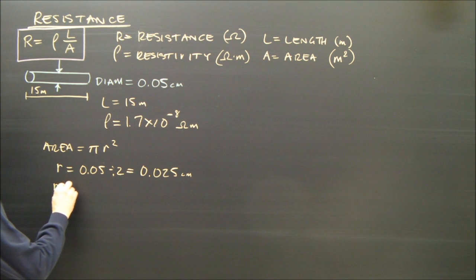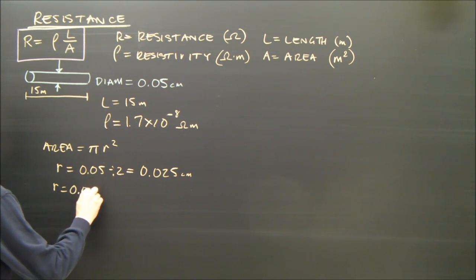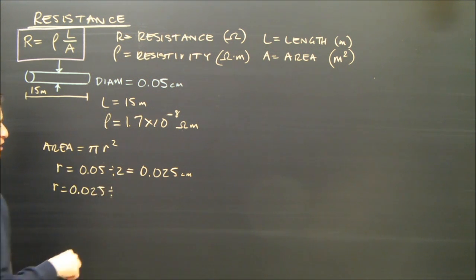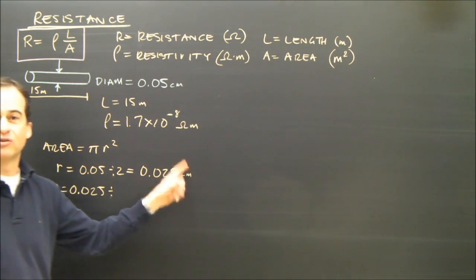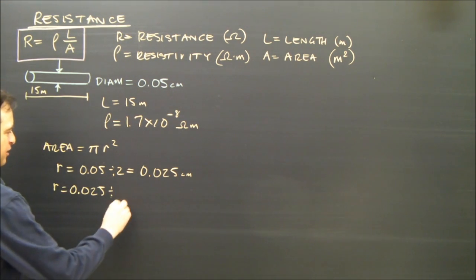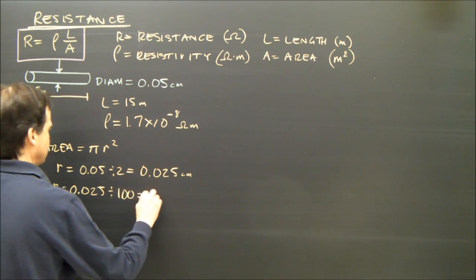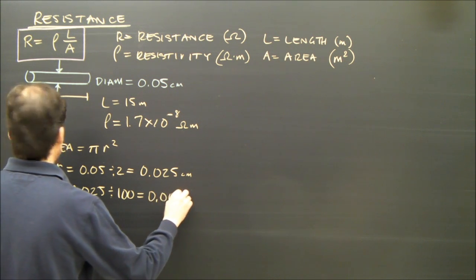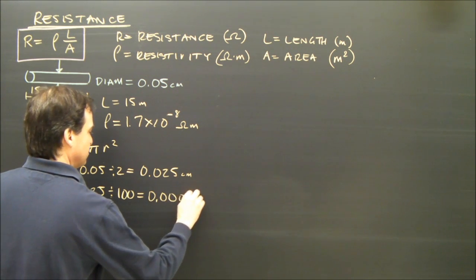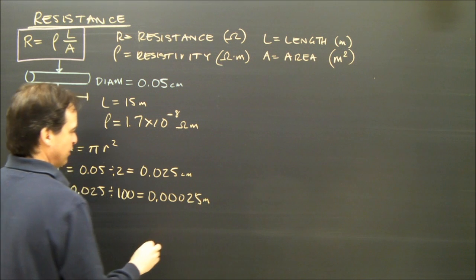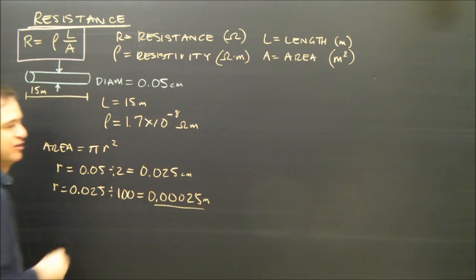So I take my radius, and I say 0.025, and divide. To go from centimeters to meters, we divide by 100. So that's going to be 0.00025 meters.